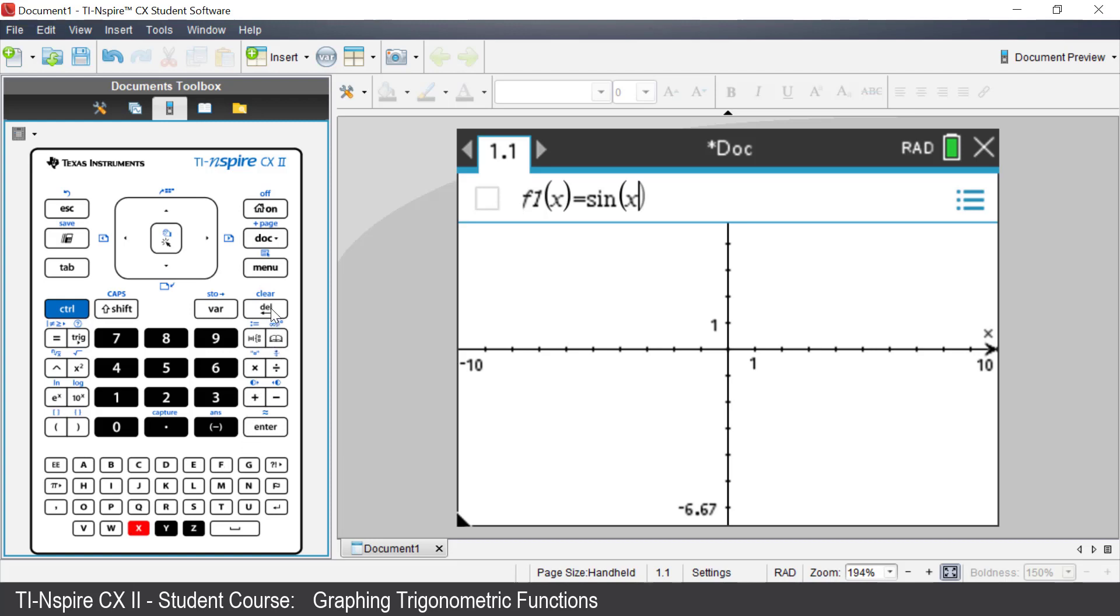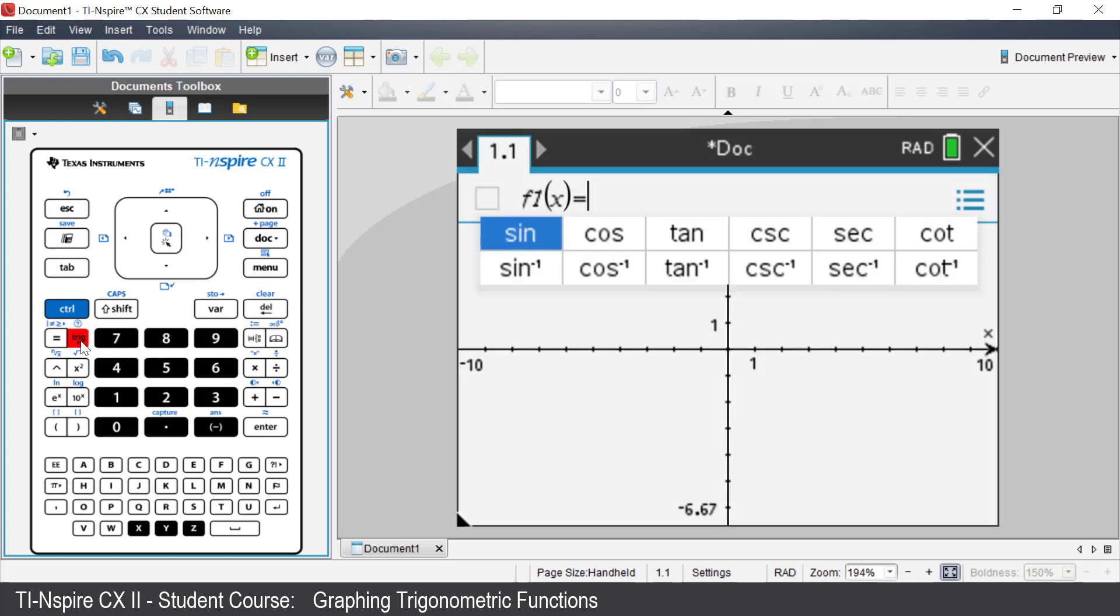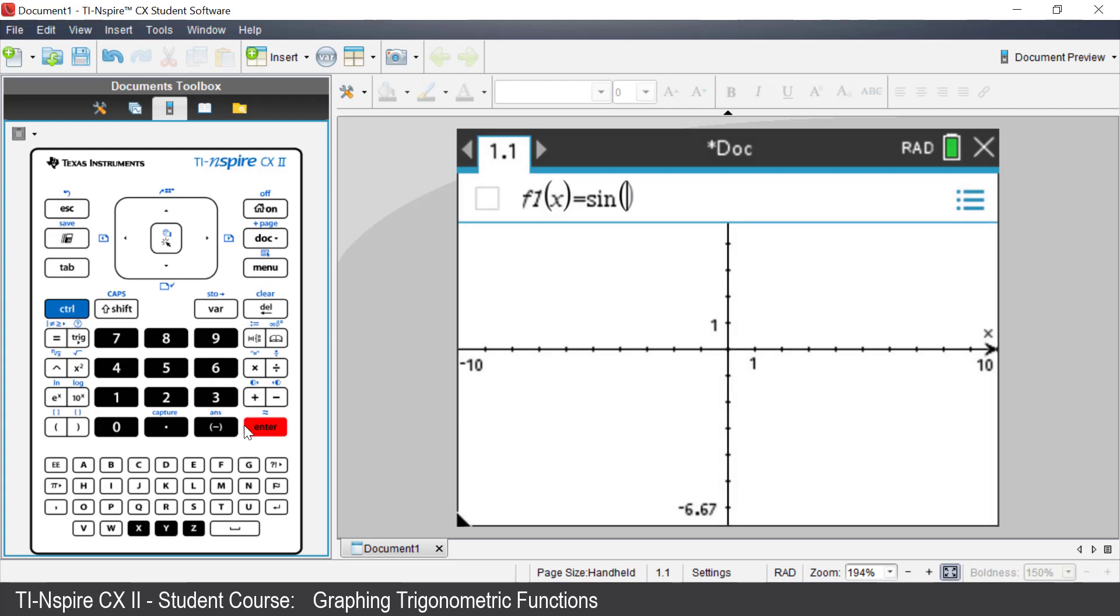Press the trig key. Select sine. Then enter X. Press enter.